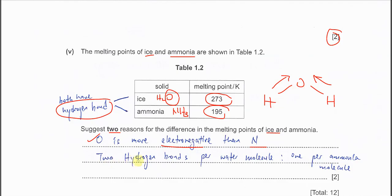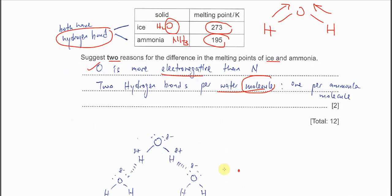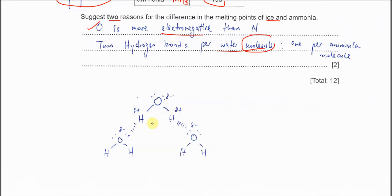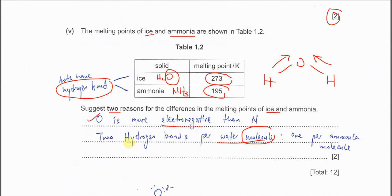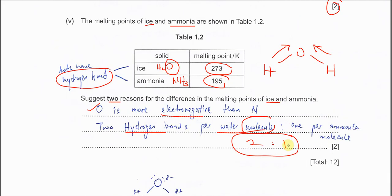The second reason is the number of hydrogen bonds per molecule. Water (H2O) can form on average two hydrogen bonds — maximum four — while ammonia (NH3) can form on average one. So there are more hydrogen bonds between water molecules than ammonia molecules. The ratio is two to one, or equivalently four to two. That is all for Question 1.